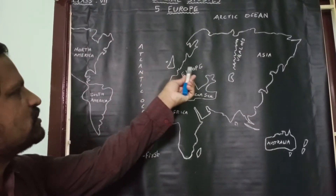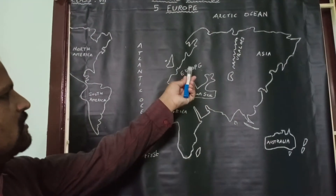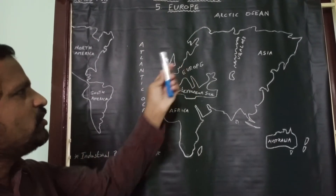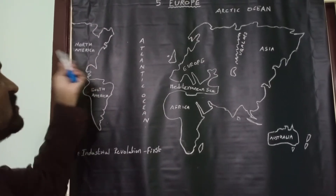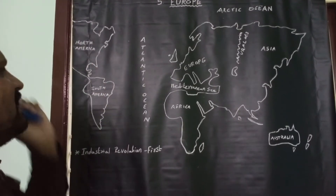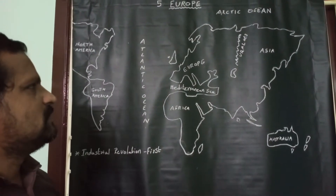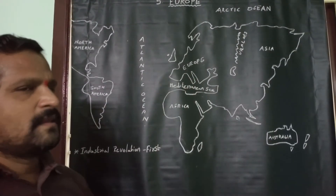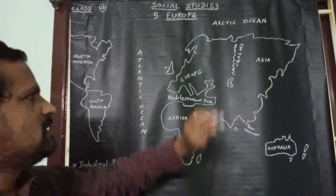Europe continent is located to the east side of the North Atlantic Ocean. To the west side of the Atlantic Ocean, America continent is located. To the east side of the Atlantic Ocean, Europe continent is located.